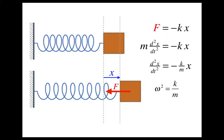We can go on and write down the period. The period is 2 pi over omega, so that's 2 pi times the square root of m over k. What we've done here is determined that the simple harmonic oscillator undergoes simple harmonic motion — so I guess it's well named.